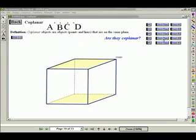Coplanar. And to have points that are not on the same plane, that would be non-coplanar. For example, this point right here would not be coplanar with the other three. So those four points as a group would be non-coplanar.